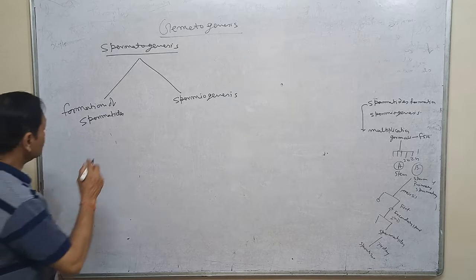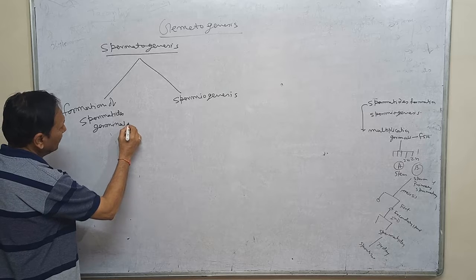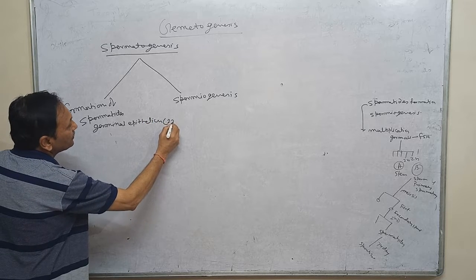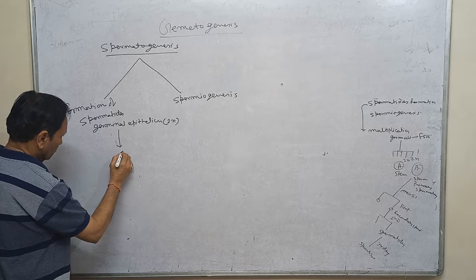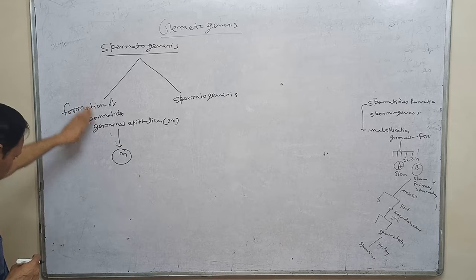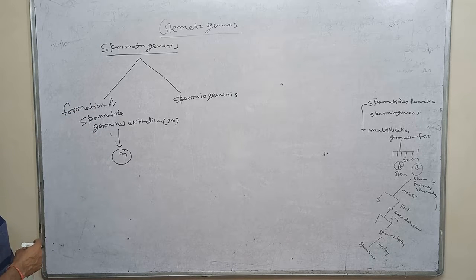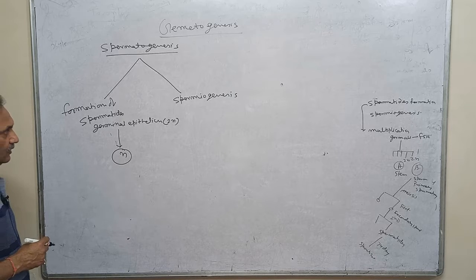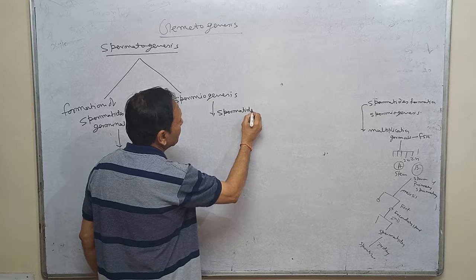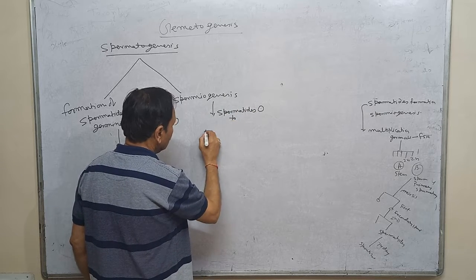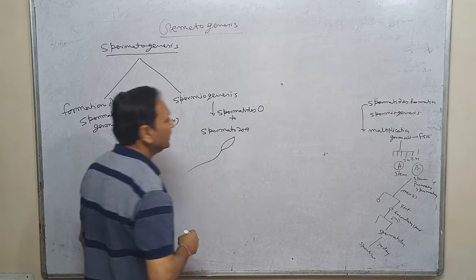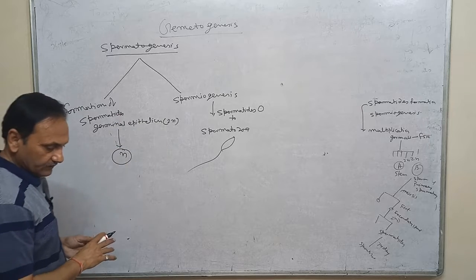Formation of spermatids means the germinal epithelium, which is diploid in nature, converts into haploid gametes, but they are still circular in nature. We will discuss how this germinal epithelium converts into spermatids. Spermiogenesis is the conversion of spermatids, which are circular in nature, into spermatozoa, which have a tail.